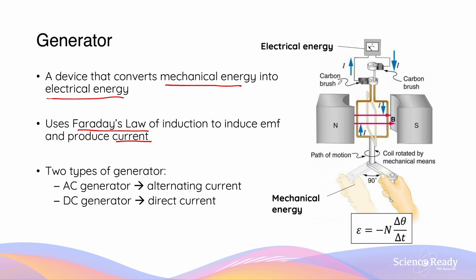The structure of a generator is similar to that of a simple DC motor. It consists of multiple turns of coil inside a magnetic field. This coil is then made to rotate in the magnetic field using some form of mechanical energy. As the coil rotates, it experiences changes in magnetic flux, and by Faraday's law, an EMF will be induced in the coil, hence producing current.